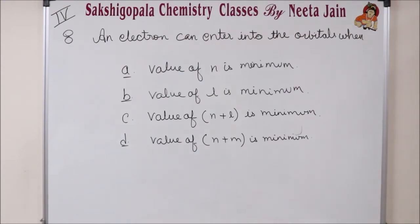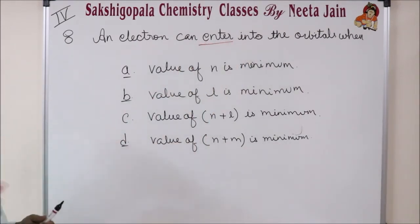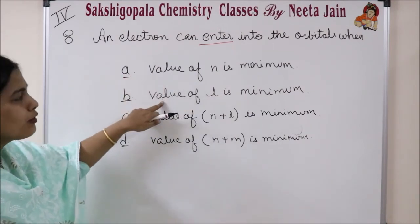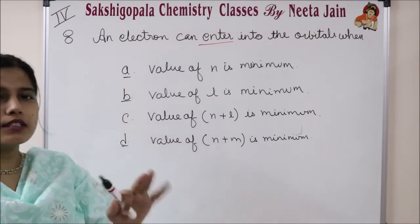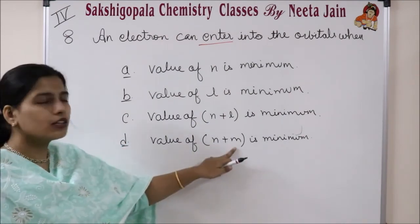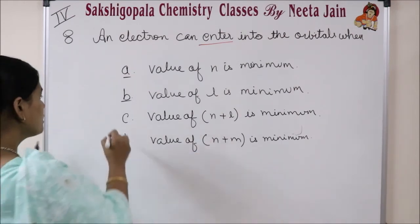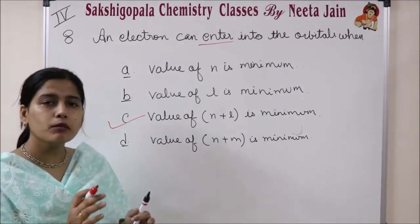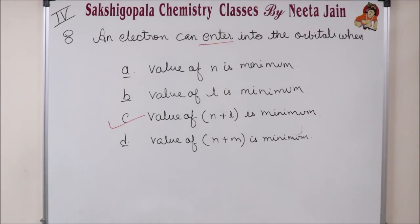Question number 8: an electron can enter into the orbital when the value of N plus L is minimum — that is when the electron enters first. The magnetic quantum number is not considered here. The correct answer is C.